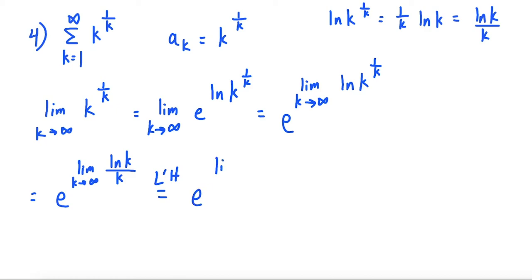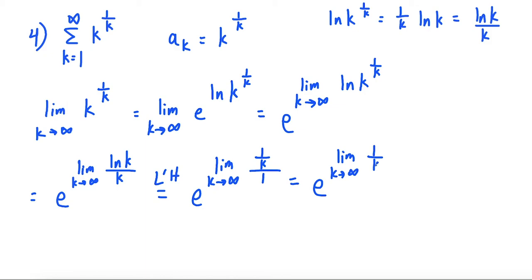Applying L'Hôpital's rule, we have e to the limit as k goes to infinity of 1 over k — the derivative of natural log of k — divided by 1, the derivative of k. As k goes to infinity, 1 over k goes to 0, so this limit is equal to e to the 0 power, which equals 1. Since the limit of a sub k equals 1, which is non-zero, by the divergence test the series diverges.